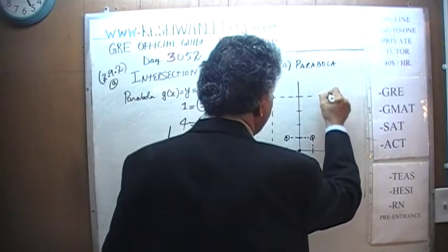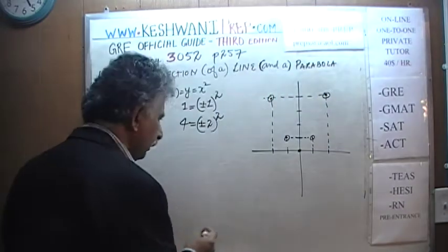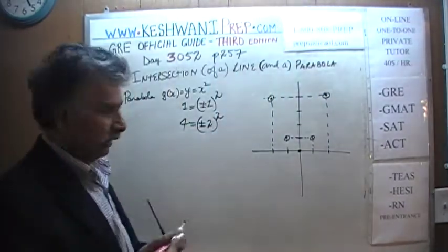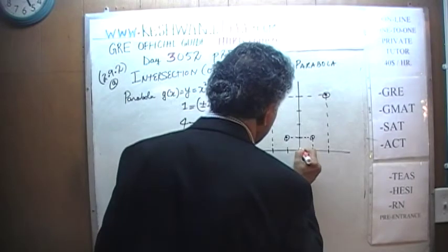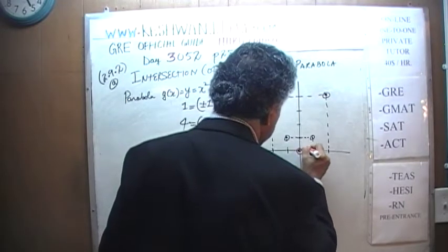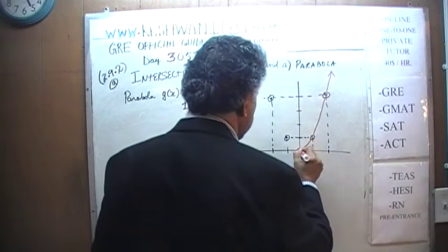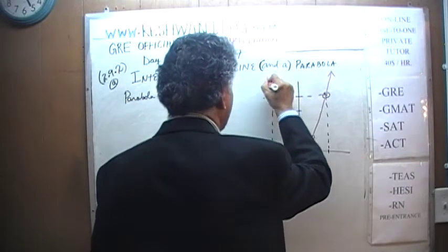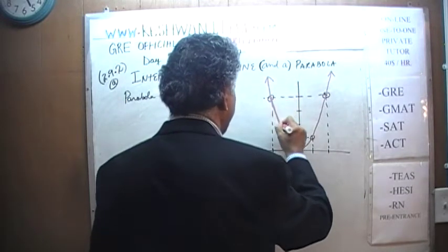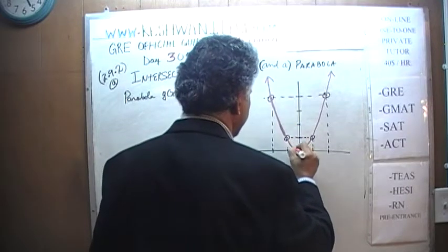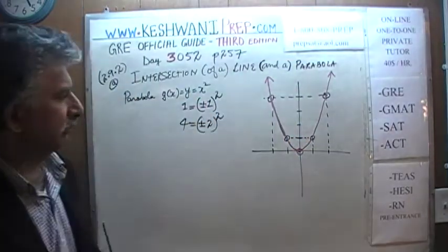There you go. That's enough for us to do our parabola. Now I am going to do freehand. Here is our parabola. Something like that. Very standard, very innocent looking parabola.